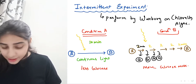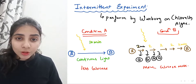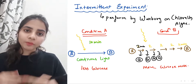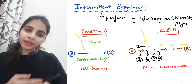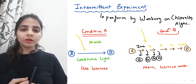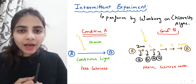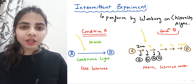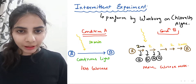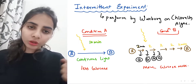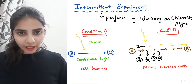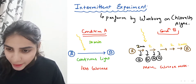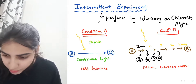This experiment also proves that light reaction happens first, and then dark reaction takes place. Through the light reaction, ATP and NADPH2 are formed, which are then utilized in the dark reaction. So this experiment proves many important things.